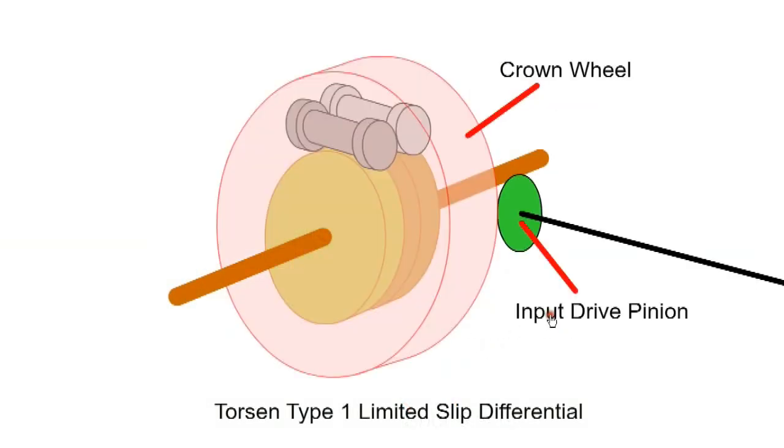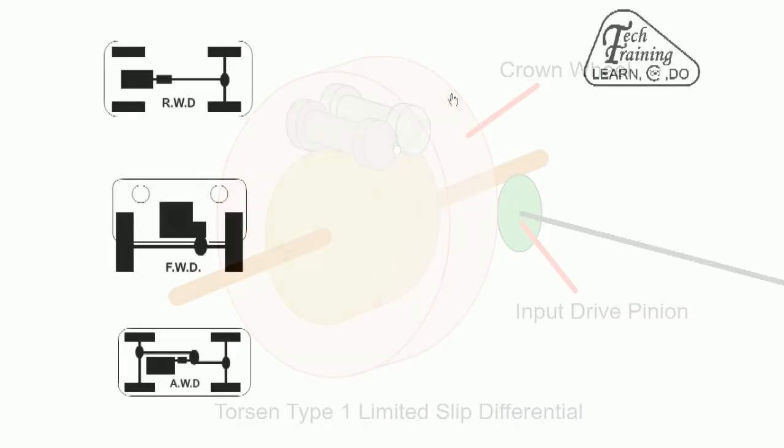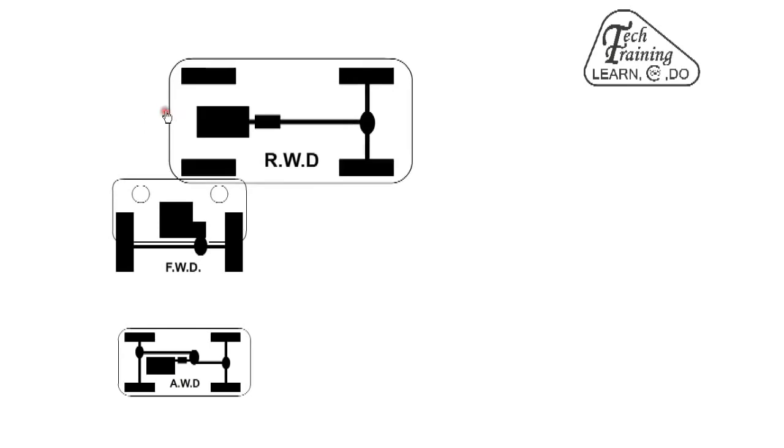During normal operation, the input drive pinion drives the crown wheel and cage. The Torsen will allow for speed difference when cornering. However, if one wheel loses traction, the difference in torque causes the differential to bind together and limit the slip. Most road cars will have an open differential, while rally cars will have an LSD to limit wheel slip during rapid acceleration, and off-road vehicles will have the option of a locked differential.